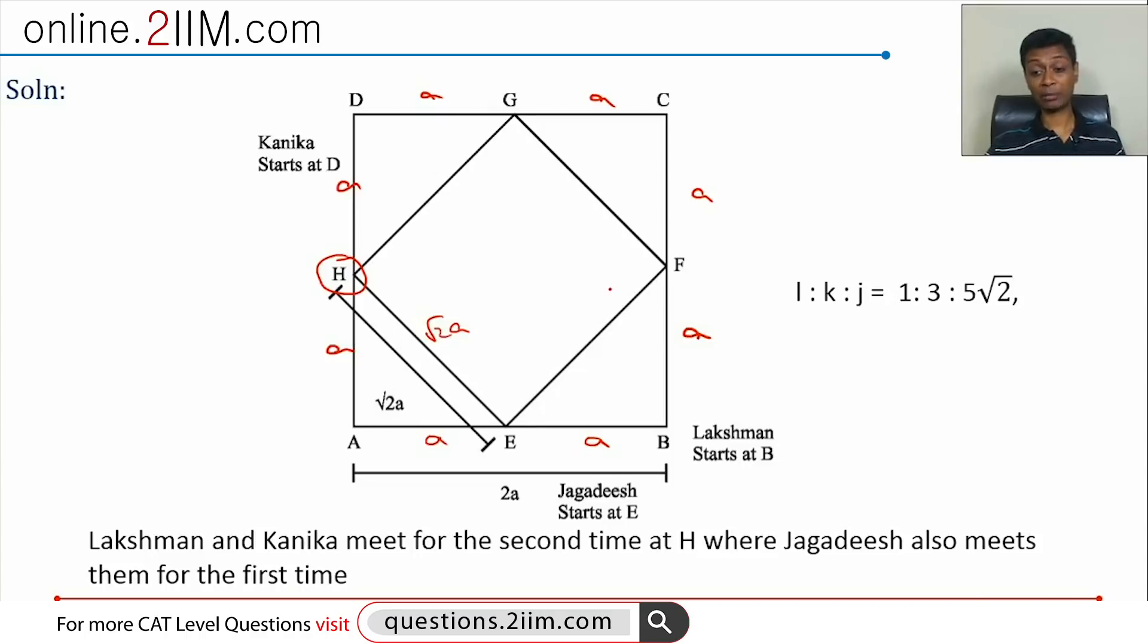Lakshman and Kanika meet for the second time at H. They move towards each other. We could have a scenario where Kanika moves like this and Lakshman moves like this, or Kanika moves like this and Lakshman moves like this. Let's evaluate both and find out which direction they are moving. Lakshman to Kanika, the speed is 1 is to 3. Kanika is thrice as fast as Lakshman. So if Lakshman went like this and Kanika like this, then Kanika would travel thrice the distance.